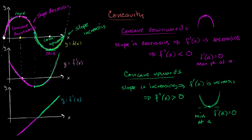Before that point, the slope was decreasing, and then the slope starts increasing. Right here in our function, we go from being concave downwards to concave upwards. When you look at our derivative at that point, our derivative went from decreasing to increasing. And when you look at our second derivative at that point, it went from being negative to positive.